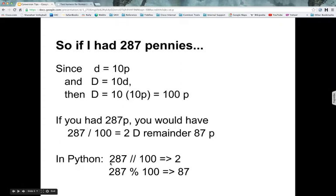So in Python, how do you get this? You have 287, which is the number of pennies that you have, and divide it by that conversion factor, which is 100, and you get two. And the double slash there is the integer division, which gives you only the integer part. We know that 287 divided by 100 is 2.87, but since this is integer division, you only get the whole number two. And then to get the remainder, you use the modulo operator, which is 287 modulo 100, which gives you 87, which is the remainder.